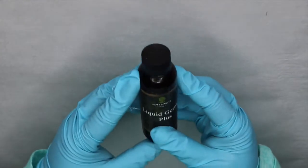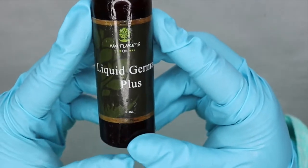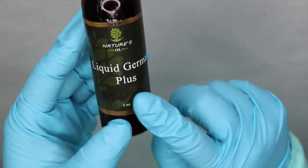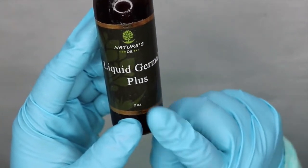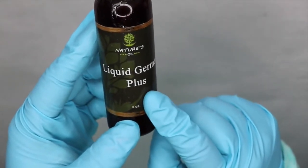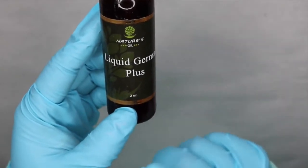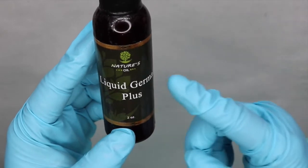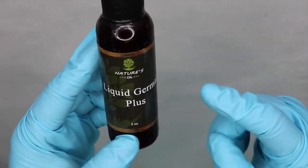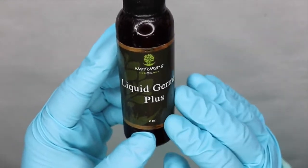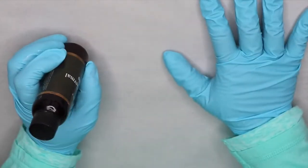And for the preservative I will be using Liquid Dermal Plus at 0.2 percent. The maximum is 0.5. I usually use 0.5 but in this case I'm only using 0.2 because the foaming bath whip already comes with preservative, but it does not account for the water that may be included in it when people are taking a bath. So come on let's get started.